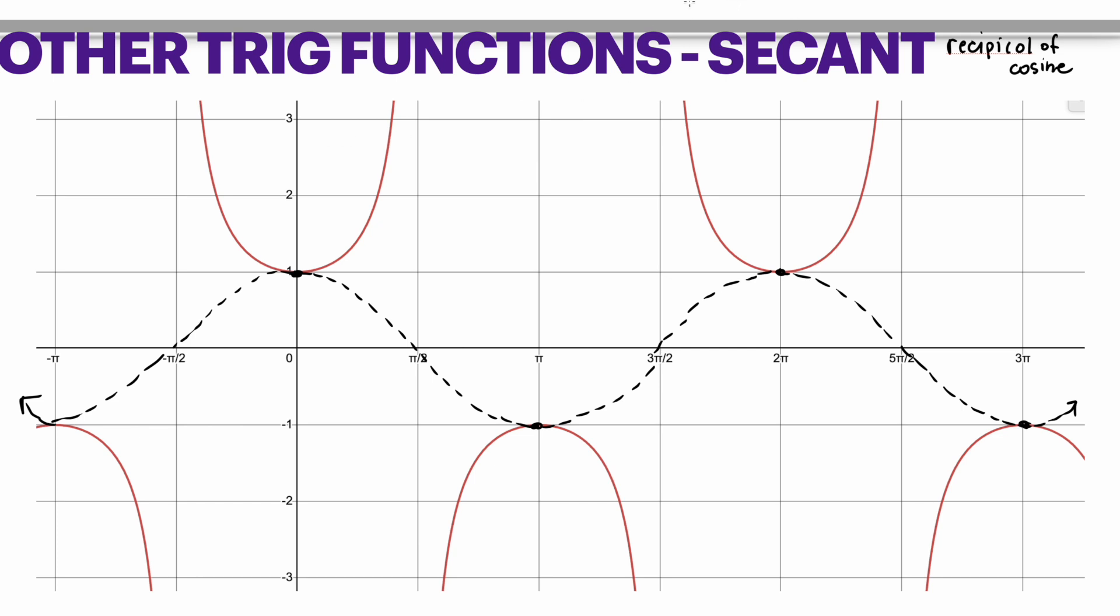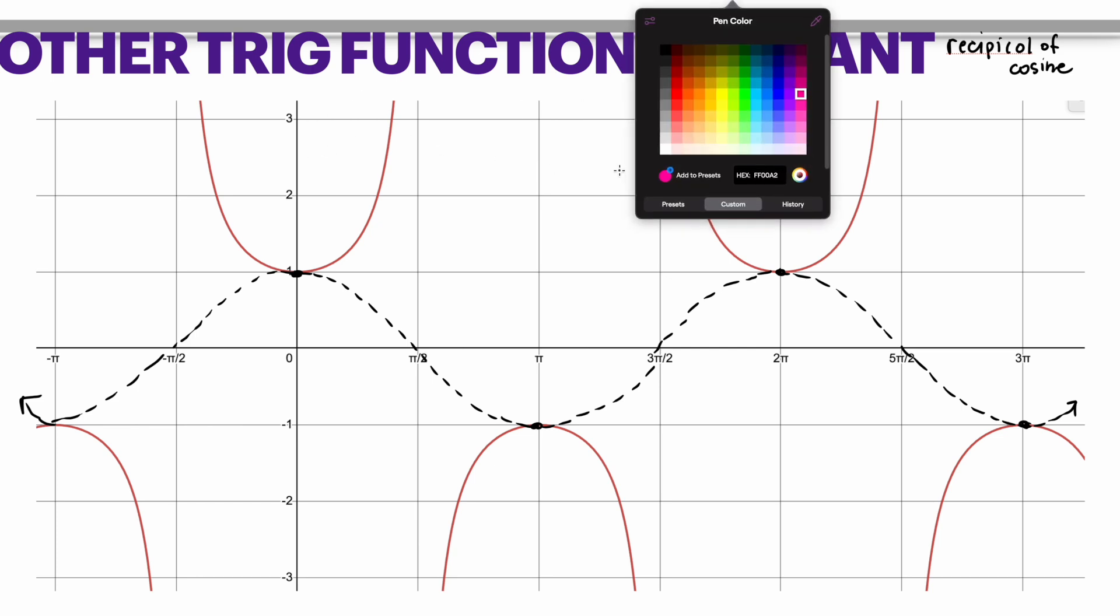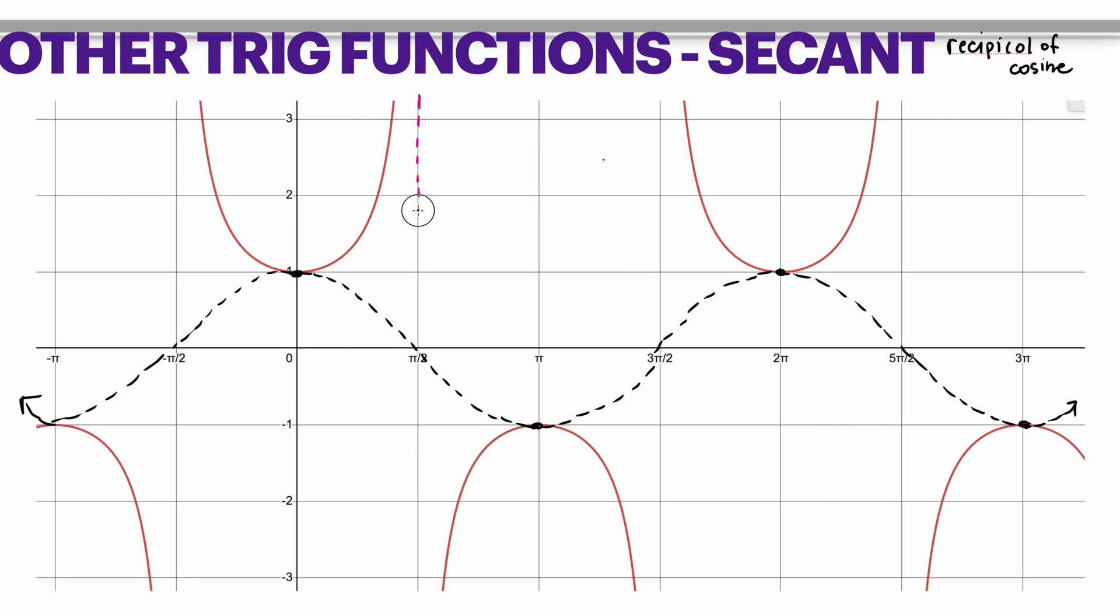The reason they will never touch each other is because an asymptote actually gets created in between these parabola-like shapes. The reason is if cosine is 0 at π/2, that means secant is going to be 1 over 0 at π/2, which we know is undefined. So anytime cosine is 0, then secant is going to have an asymptote.